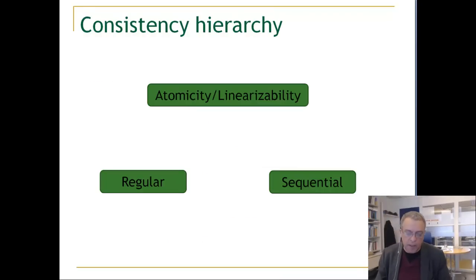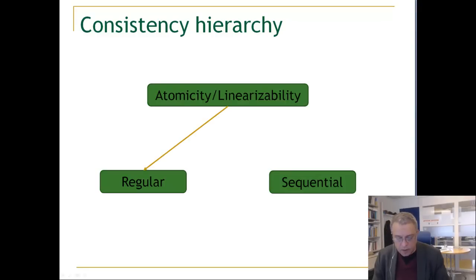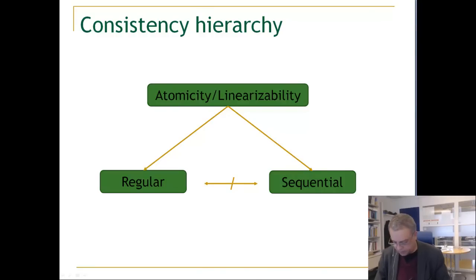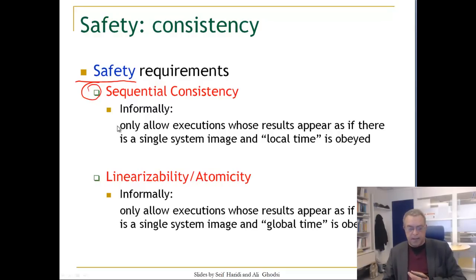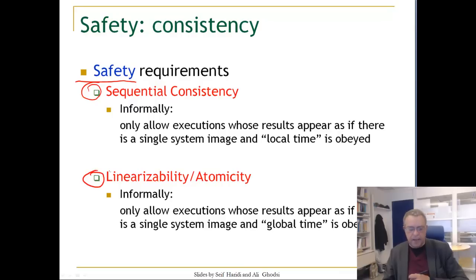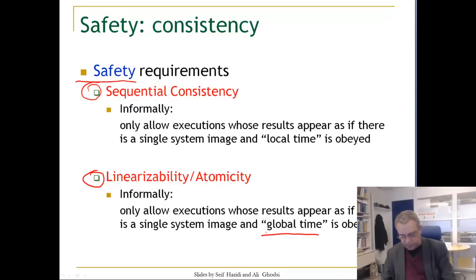What we conclude from this is that we have a consistency hierarchy. If an execution is atomic, it is also regular, and if an execution is atomic, it is also sequentially consistent, but regular execution and sequentially consistent execution are not comparable. Sequential consistency says: only allow executions where results appear as if there is a single system image and local process time is obeyed. Linearizability says: allow executions that appear as a single system image, but also global time is observed.